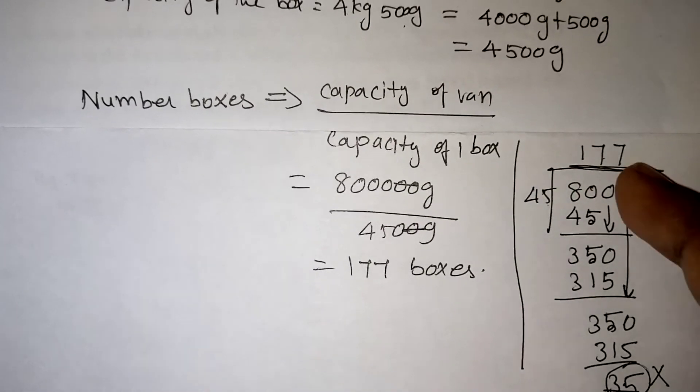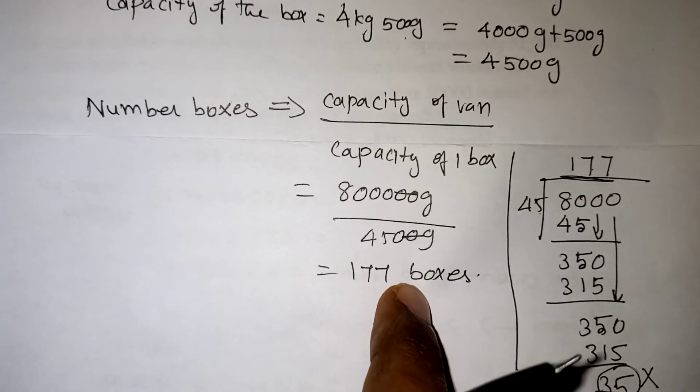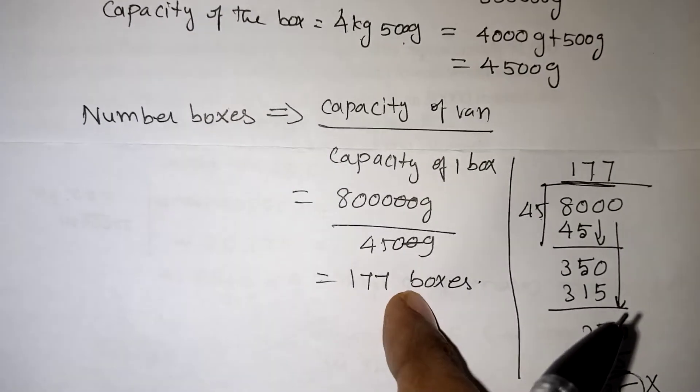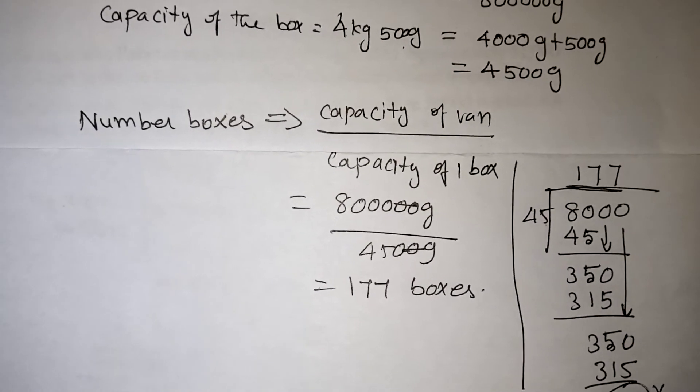This 35 grams of medicine will be available outside which cannot be loaded in that van. You don't need to mind for that remainder value. 177 boxes is your correct answer. Thank you students, thank you for watching. Subscribe to the channel for more videos.